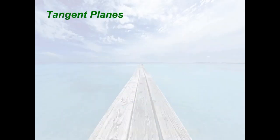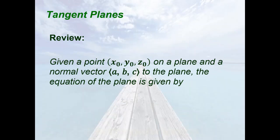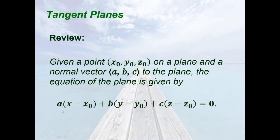Let's first have tangent planes, and review some concepts from the previous unit. Given a point (x₀, y₀, z₀) that lies on a plane, and a normal vector with components a, b, c to the plane, the equation of the plane is given by: a(x − x₀) + b(y − y₀) + c(z − z₀) = 0.